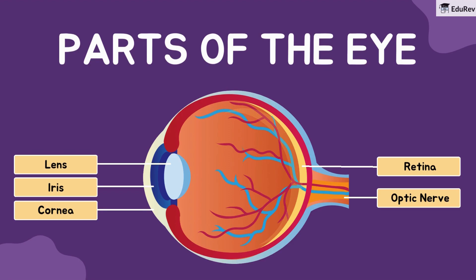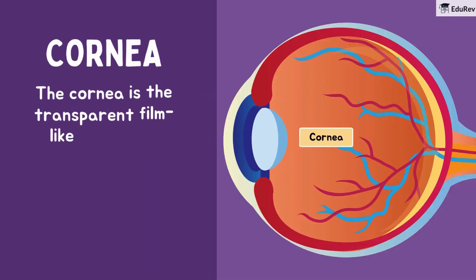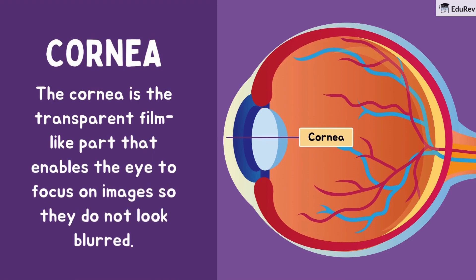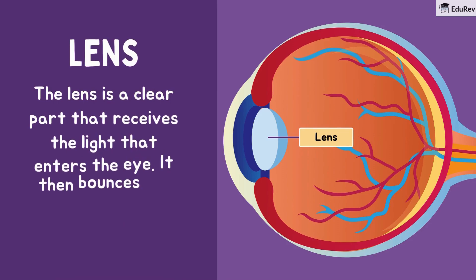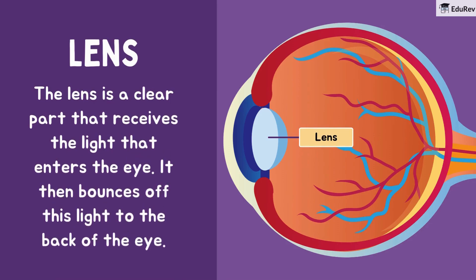Let's learn about them one by one. The cornea is the transparent film-like part that enables the eye to focus on images so they do not look blurred. The iris is the colored part in front of the eye; it helps screen and control the amount of light that enters the eye. The lens is a clear part that receives the light entering the eye and then bounces it off to the back of the eye.